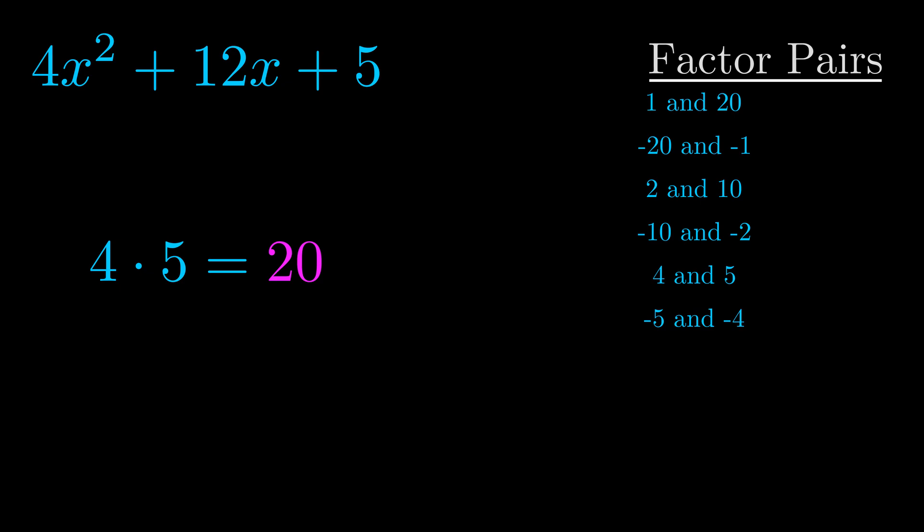The b value is the coefficient on the x term. That's the middle term, the one that we haven't done anything with yet.